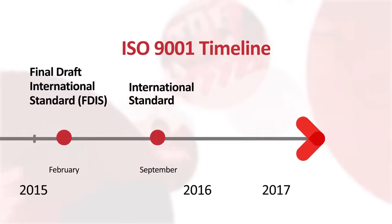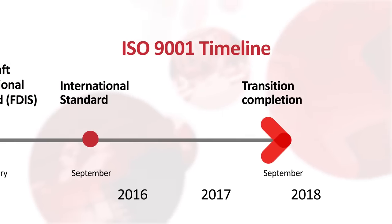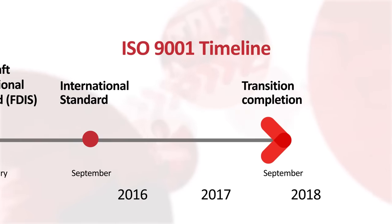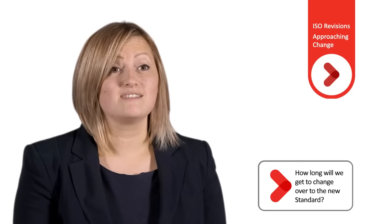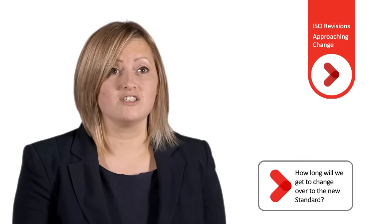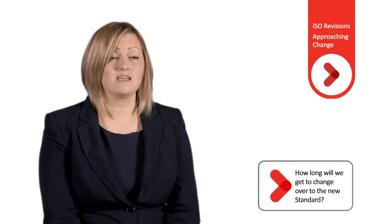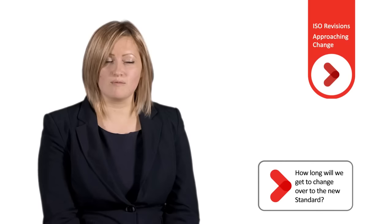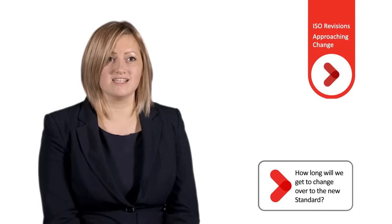A three-year transition period for existing ISO 9001 2008 clients has already been agreed with the International Accreditation Forum, so existing clients will have until September 2018 to complete their transition. This means organisations will have a lot of time to familiarise themselves with the changes to the standard and then implement those changes in their quality management system. The average time to implement a management system is six to twelve months, so you have plenty of time throughout the transition period to implement the system.